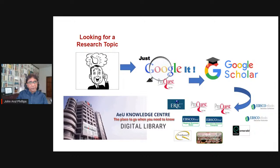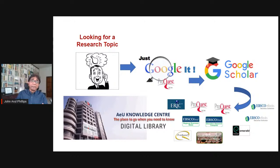Once you have zeroed in on your topic, move to Google Scholar — a more precise search engine where you'll get PDF files of research articles and reports, sometimes just an abstract. The third stage is your institution's digital library. At Asia University we call it the knowledge center, which has thousands of articles, reports, textbooks, and e-books.